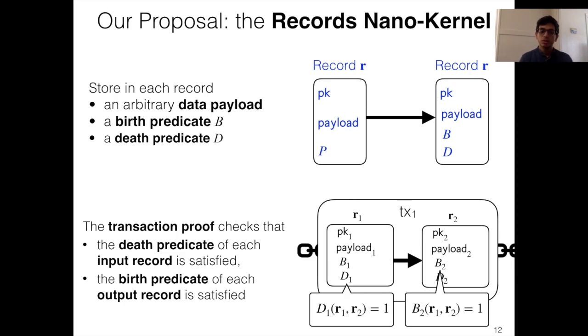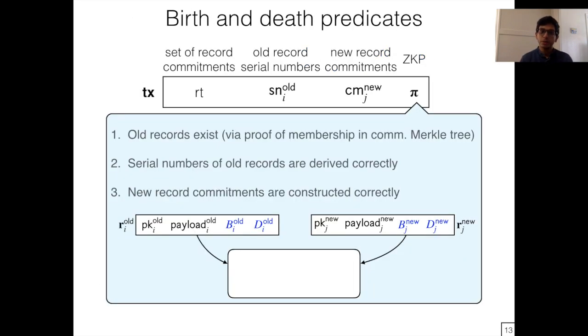The transaction proof now asserts that for every record that is consumed, so every input record, the corresponding death predicate is satisfied, while for every record that is created, so every new record, the corresponding birth predicate is satisfied. Okay, so this means that at every step of a record's life, from creation to consumption, there is some constraint being enforced. From an implementation perspective, this will just look very simple. For every input, you check that its death predicate is satisfied; for every output you check the birth predicate is satisfied. The rest of the transaction proof is unchanged.